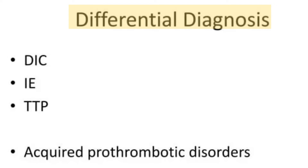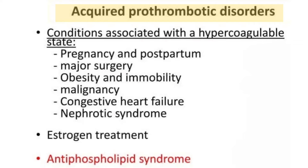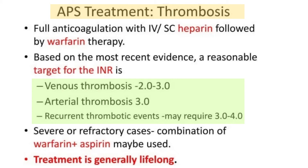The differential diagnosis of antiphospholipid syndrome includes thrombotic conditions such as DIC, infective endocarditis, and thrombotic thrombocytopenic purpura. Other conditions to consider include heparin-induced thrombocytopenia, PNH, and acquired prothrombotic disorders like Factor V Leiden mutation, protein C and protein S deficiency. Additionally, conditions like pregnancy, postpartum state, major surgery, obesity, heart failure, and nephrotic syndrome should all be ruled out before diagnosing APS.